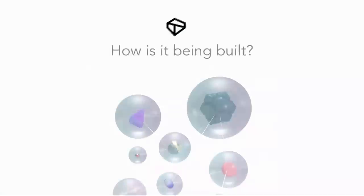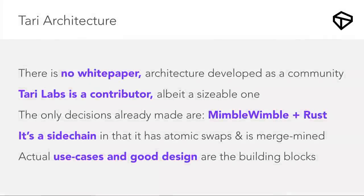So how are we architecting Tari? The first thing we did was throw out the idea of a white paper, because otherwise it's just: here's my white paper, go implement. I have some cool ideas, but I'm certainly not the owner of all the cool ideas. So we started with the idea of building the white paper with the community.